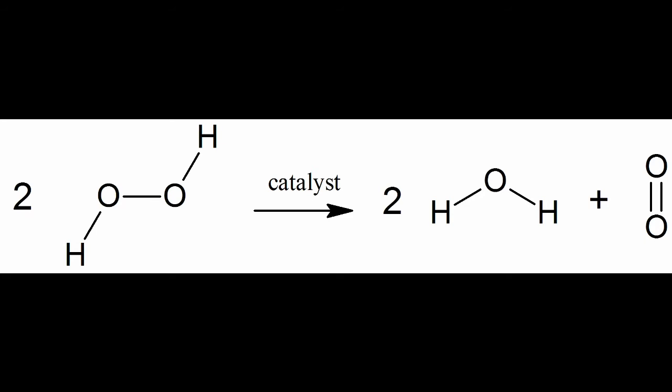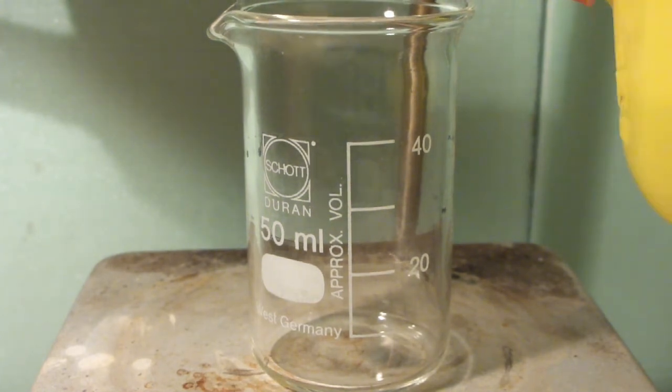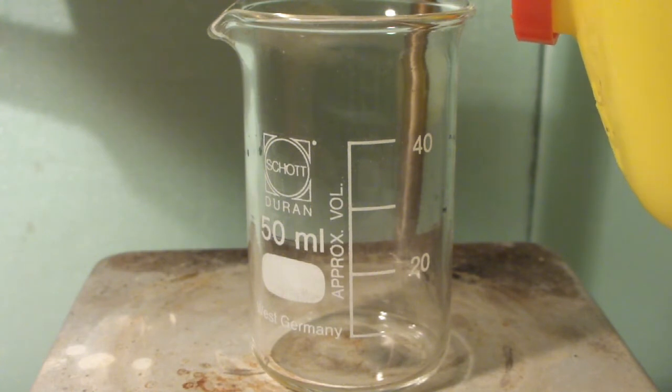From a certain concentration onwards, the decomposition can also happen explosively. We are now going to use platinum as the catalyst to decompose the hydrogen peroxide. Let's add some 35% hydrogen peroxide to a beaker.